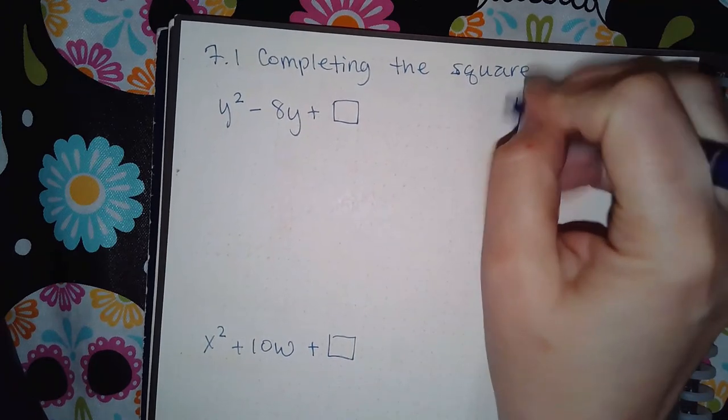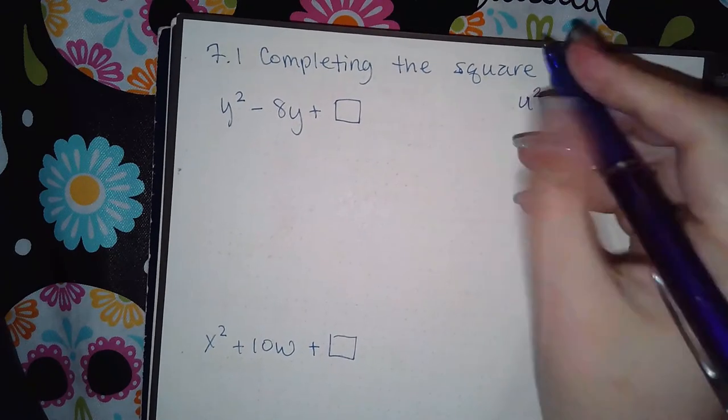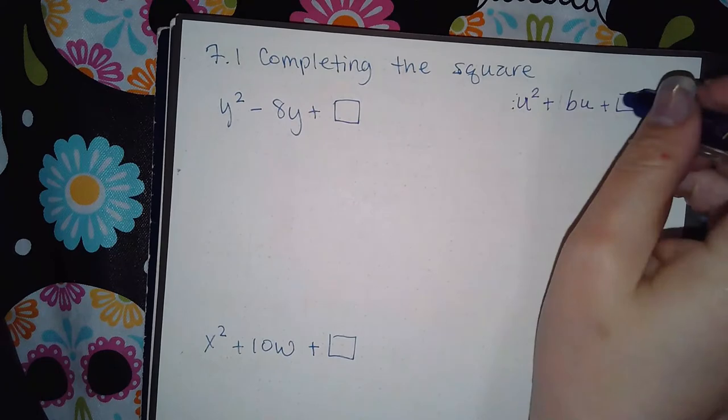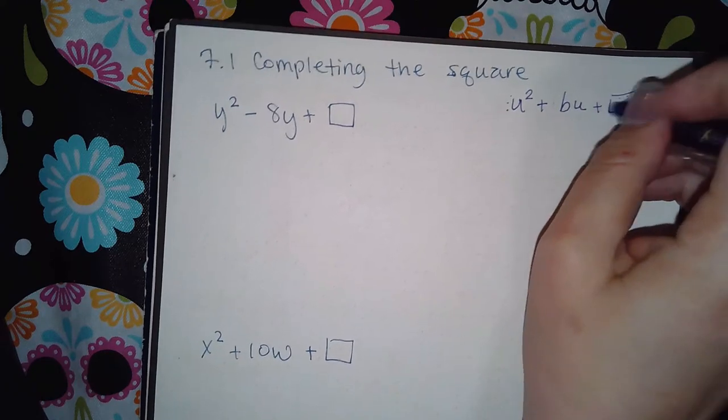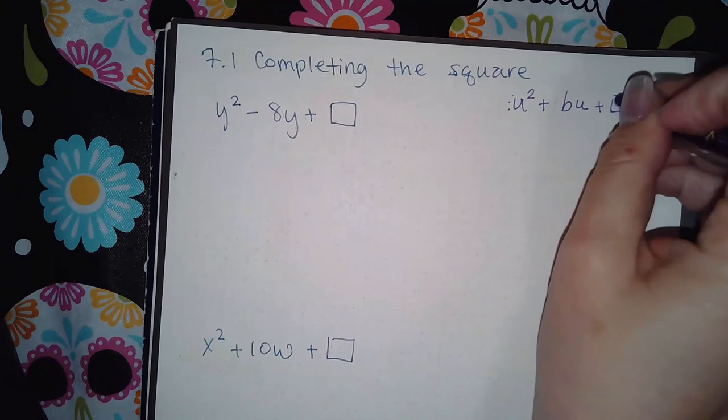But for all of these problems where you complete the square, this has to have a 1 coefficient. It cannot have any other coefficient besides 1. So you do have to make sure that it does have a 1 before you try to complete the square.